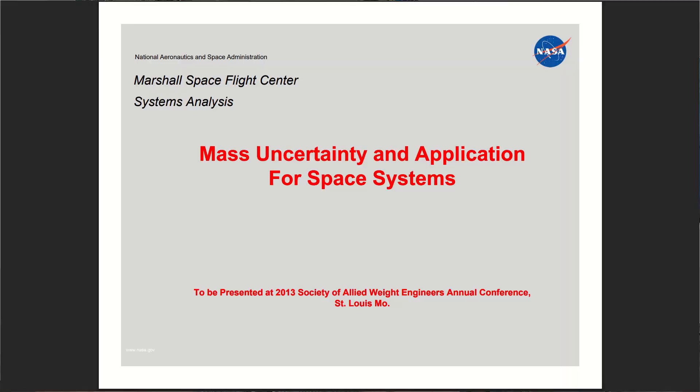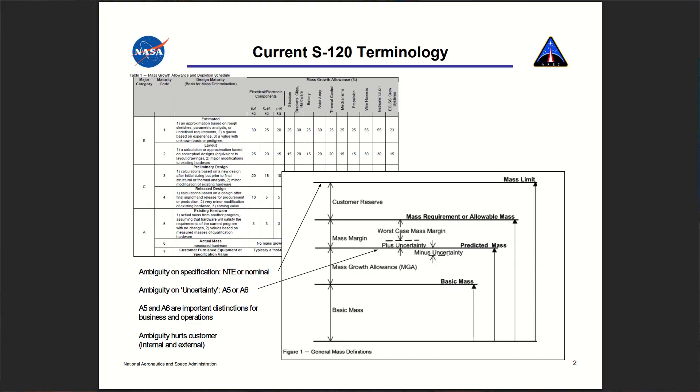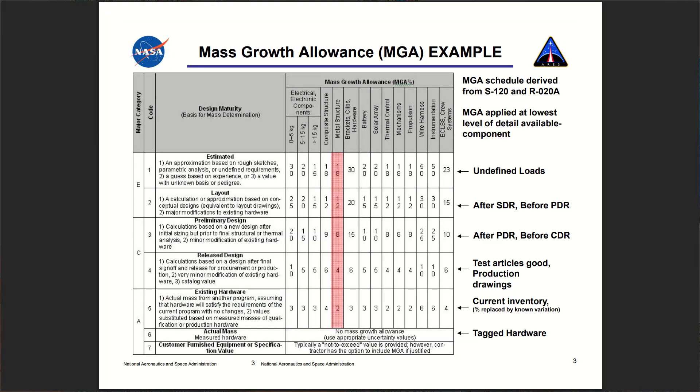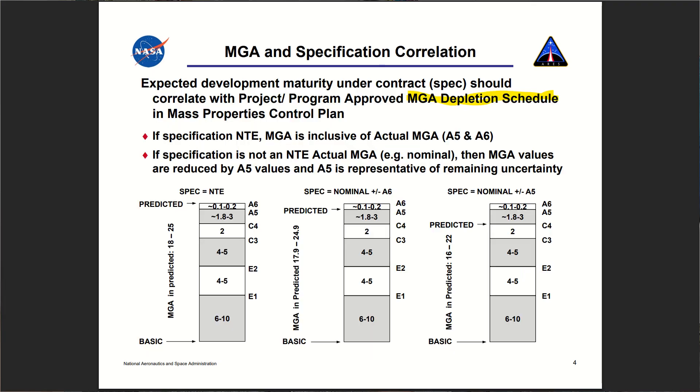Assign a mass growth allowance because your initial assessment is going to be off. And the further you progress through the design stages, that mass growth allowance will shrink more and more as it gets more defined. And same thing with power — if you have electrical systems on board, it's a good idea to do a power budget because you'll need that when evaluating flight time and range requirements later.